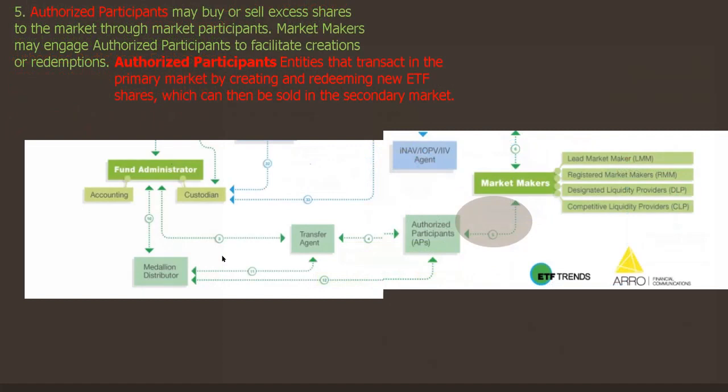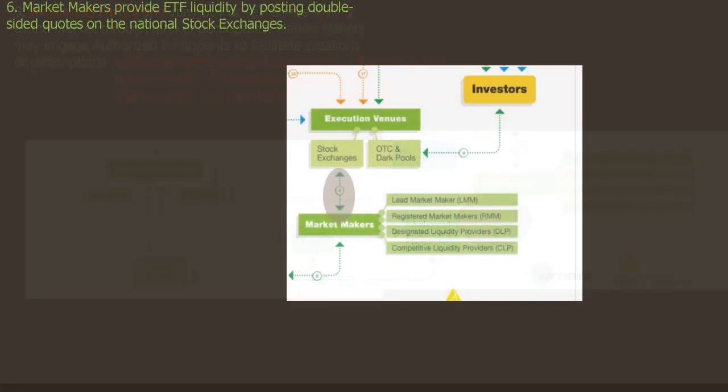Step five: authorized participants may buy or sell excess shares to the market through market participants. Market makers may engage authorized participants to facilitate creations or redemptions. Step six: market makers provide ETF liquidity by posting double-sided quotes on the national stock exchange, which we see here.